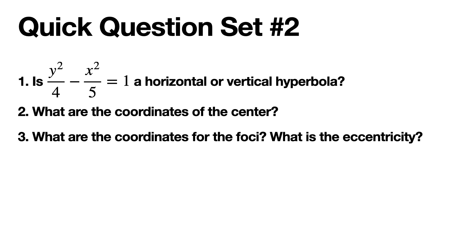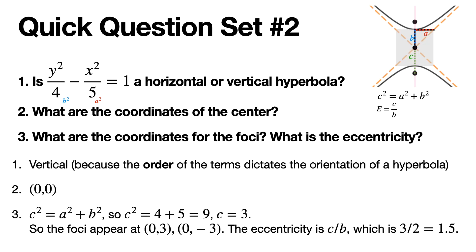Because the y squared term comes first — and not because of the sizes of 4 versus 5 — we know it's going to be a vertical hyperbola. The vertical hyperbola has y come first in the formula; the x term is subtracted from the y term, and the size of a and b have nothing to do with the orientation. So the center is (0, 0), and in any hyperbola c is the biggest value, so c squared equals a squared plus b squared.